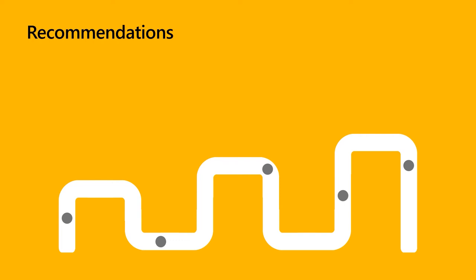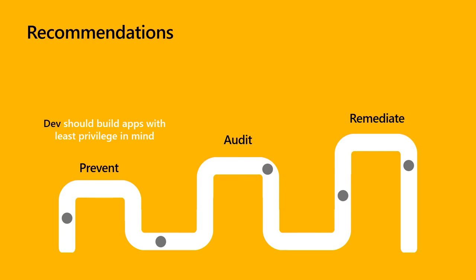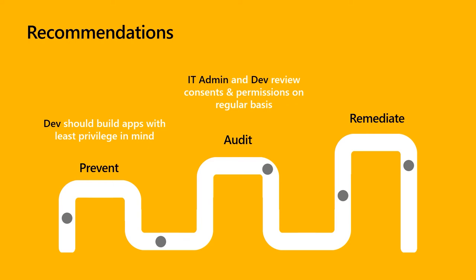Security is a journey, not a destination. There are three distinct phases — prevention, auditing, and remediation — in the security lifecycle. When building an application, developers need to fully understand the permissions required for the API calls their application needs to make, and only request what is necessary to enable their scenario. IT admins and developers should review the privileges that have been previously granted to existing applications on a regular basis. If an overprivileged application is identified, the developer should stop requesting tokens for the overprivileged permission and the IT admin should revoke the granted consent. This step usually requires a code change.